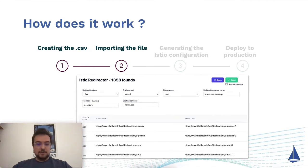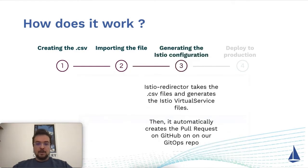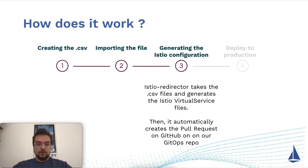The SEO specialist will specify the environment where the redirection will be deployed — preproduction, staging, production — a namespace, and eventually the group name that will be used to name the virtual service. Then by a single click on the button, the payload will be sent to the backend where the virtual service will be generated as a YAML file and either sent back to the user if they do not use GitHub, or sent to GitHub to create a new pull request on your repository for the given environment.